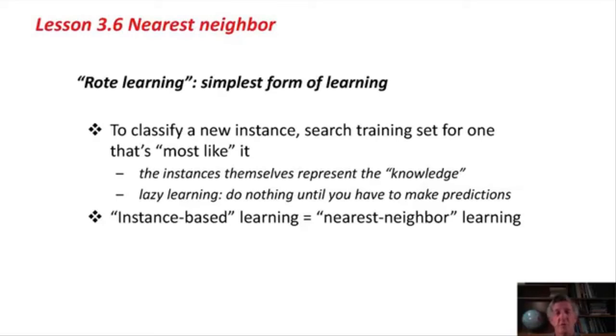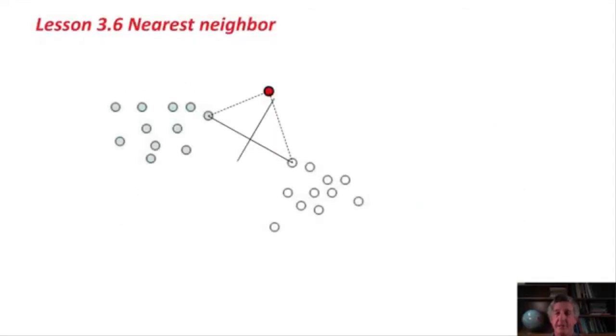Confusingly, it's also called Instance-Based Learning. Nearest Neighbor learning and Instance-Based Learning are the same thing. Here is just a little picture of two-dimensional instance space. We've got the blue points and the white points, two different classes, yes and no, for example. Then we've got an unknown instance, the red one. We want to know which class it's in, so we simply find the closest instance in each of the classes and see which is closest. In this case, it's the blue class, so we would classify that red point as though it belonged to the blue class.